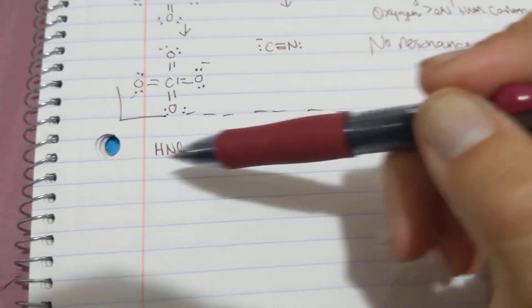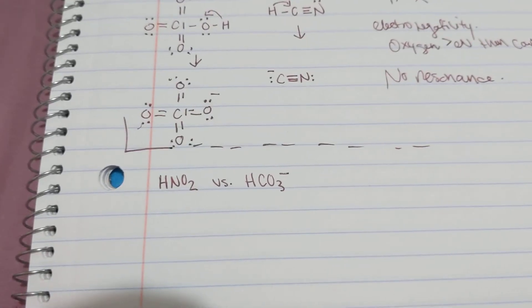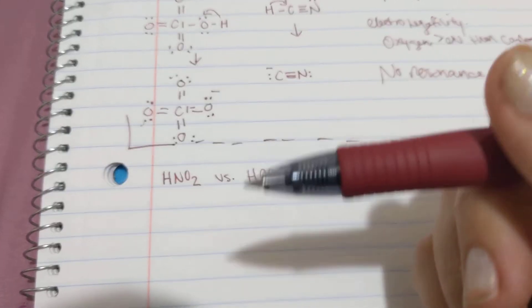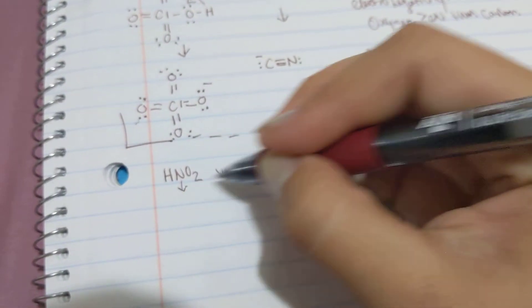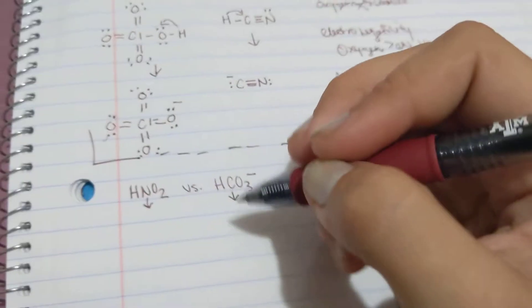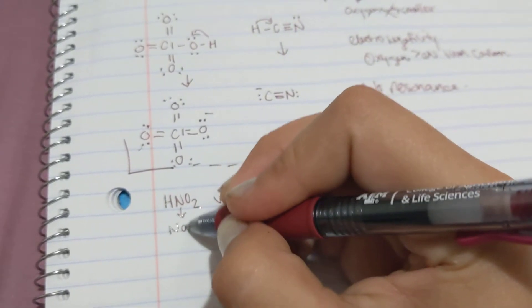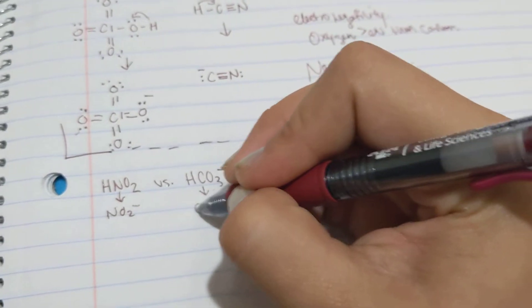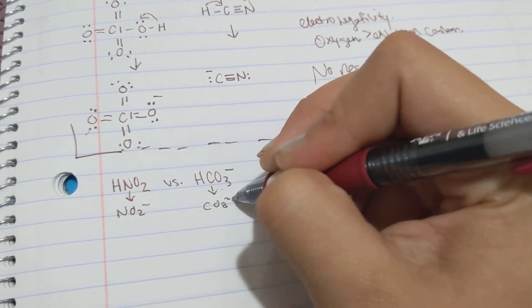Okay, like I said, we're on a time crunch, so let's go. The next two are HNO2 versus HCO3. The conjugate bases of which are NO2 minus and CO3 2 minus.